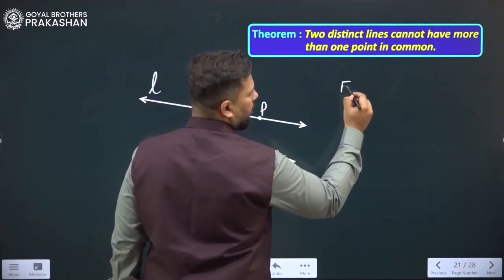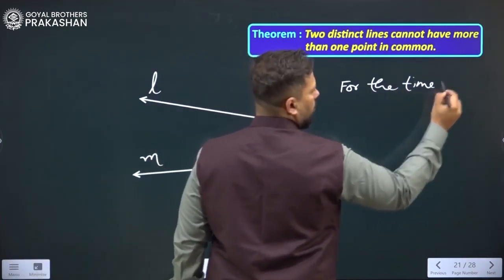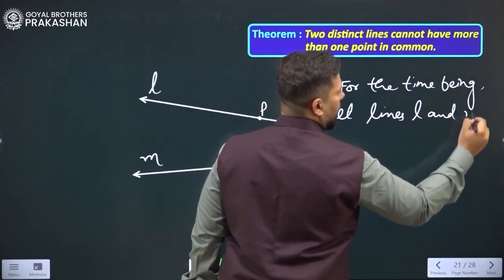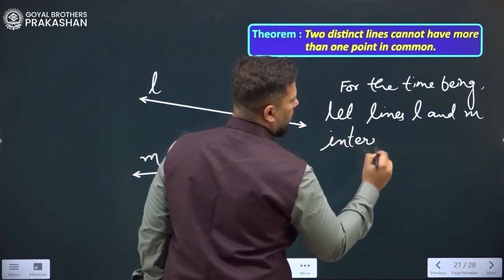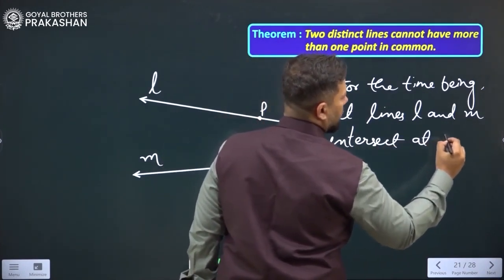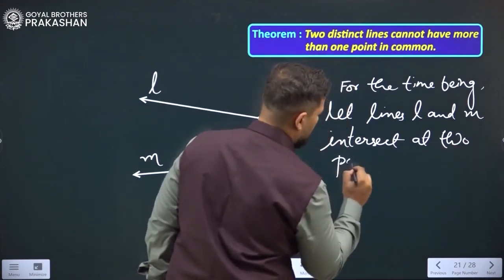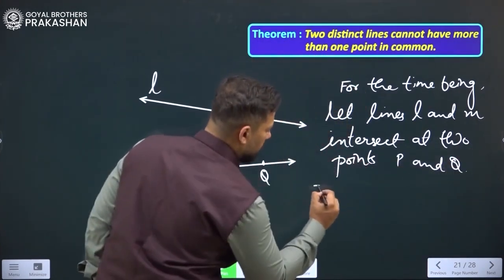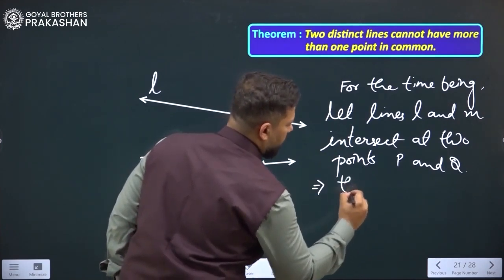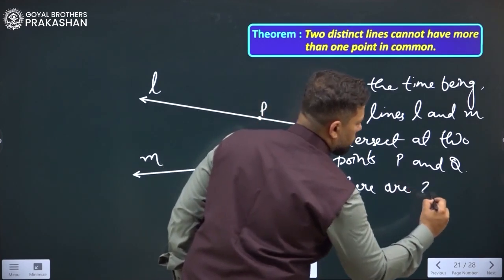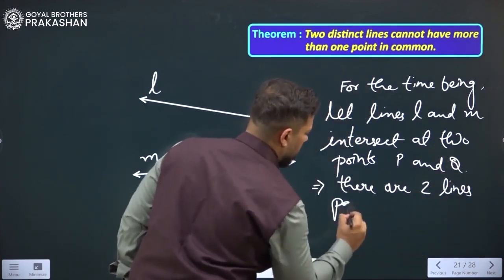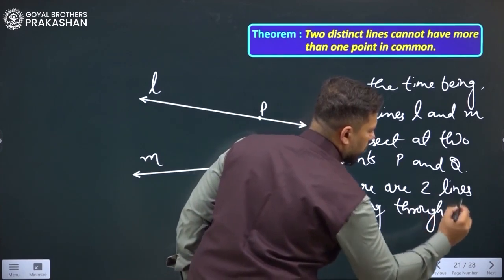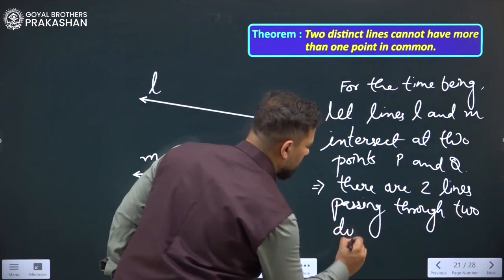So if I say so that for the time being, let lines L and M intersect at two points, lines P and Q. This implies there are two lines passing through two distinct points.